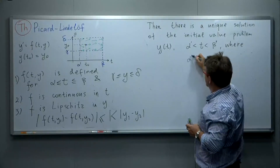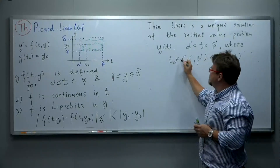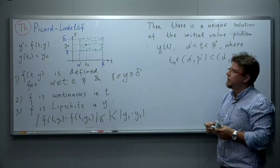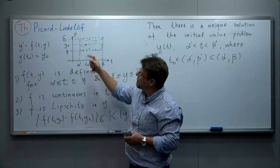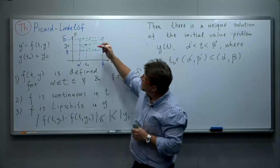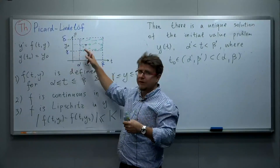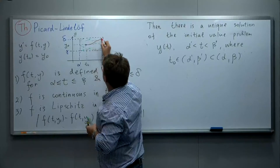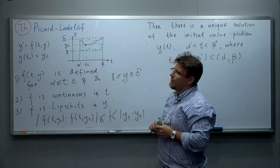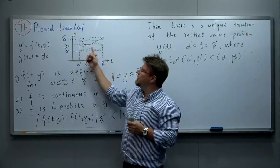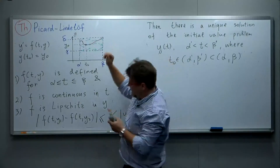That is the conclusion of the Picard-Lindelöf theorem. On the picture, it tells us that it is always possible to draw a curve in this rectangle which is tangent to the vector field at each point. However, the interval of t for which the curve is defined may be smaller than [α, β] — for example, if the arrows in the vector field are steeper.